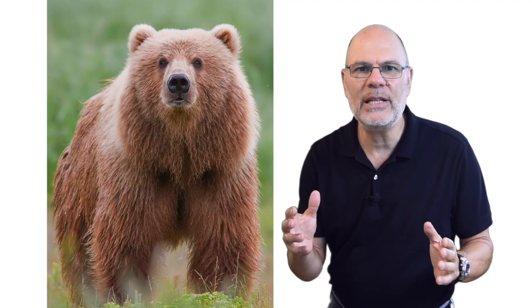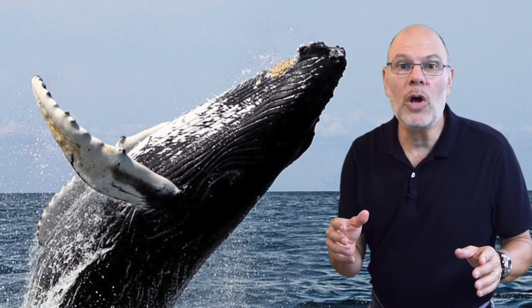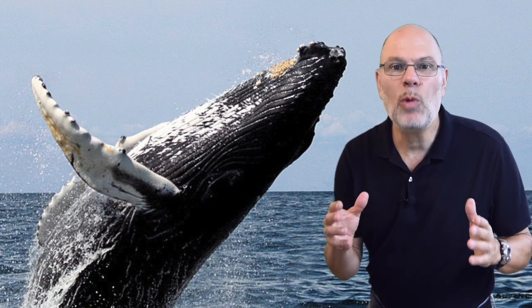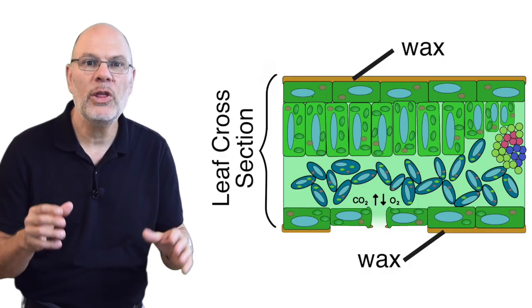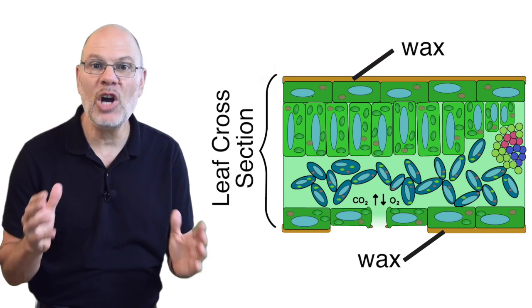That's why bears fatten up for the winter. Fats and oils are also used for insulation, and that's why whales have a lot of fat. Waxes are used for waterproofing. The surface of every leaf is covered with wax.